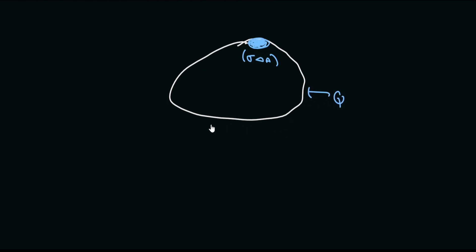Since we give a charge Q to this conductor, the charges will be distributed on the outer surface of the conductor. We want to find the electrostatic force due to the rest of the charges — that is, the charges that reside on the outer surface of the conductor except this patch, and any charges that are external. The force due to all those charges.